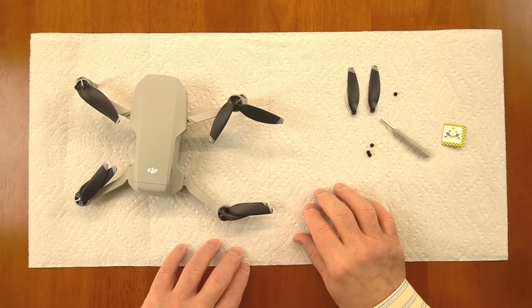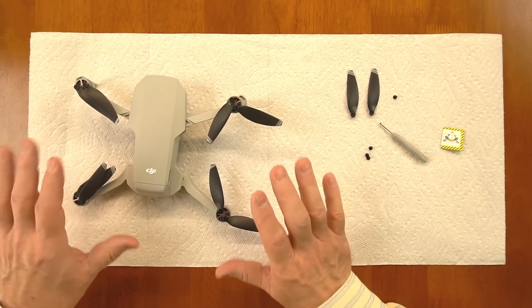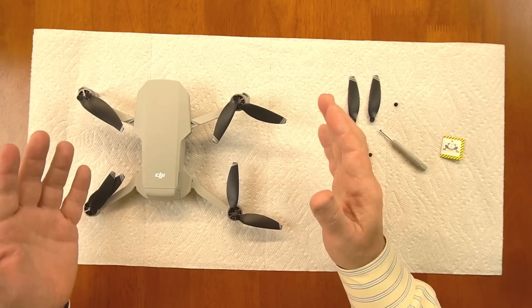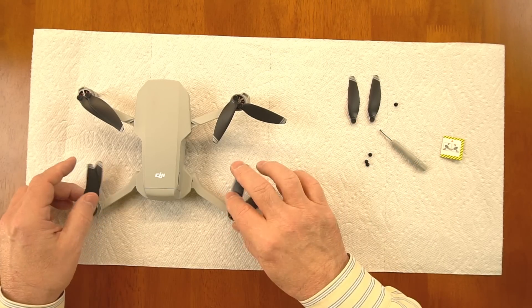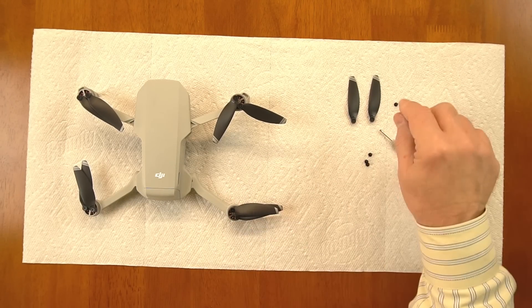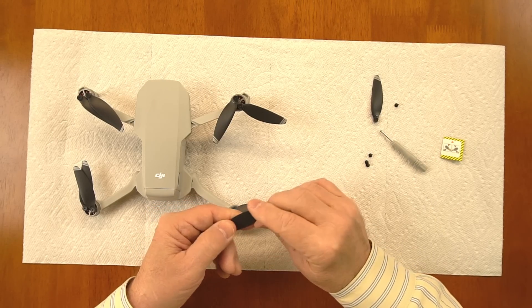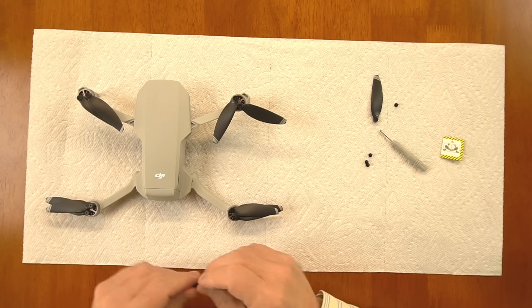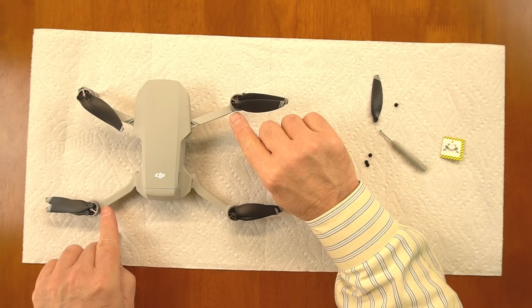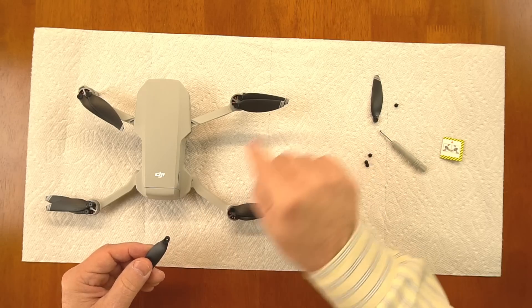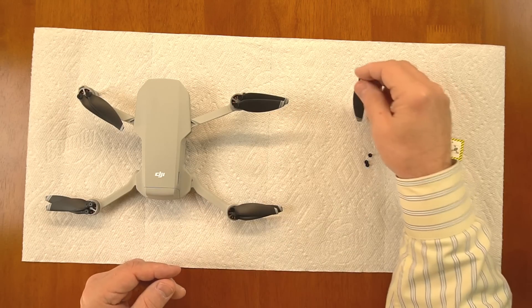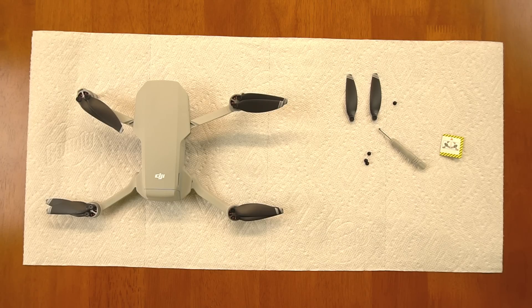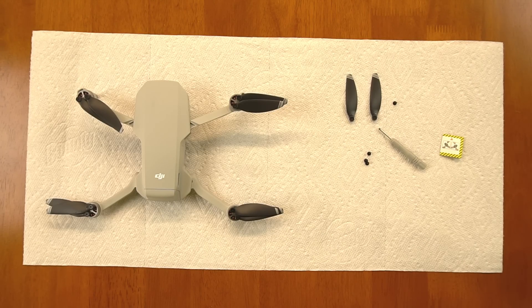One last thing I want to point out is that if for some reason you decide it's a good idea to pull off all four props at the same time, don't do that. But if you do and you're saying oh my gosh which prop goes where, they did you another favor by actually putting a line here on the double stripe props. You can see a little line right there and there's a line on the arm so if you ever forget where they go you can look for the lines and know those are the double props or the double stripes and the line on the prop. I think they've done everything they can to make it easy to change them out and it really is just that simple.